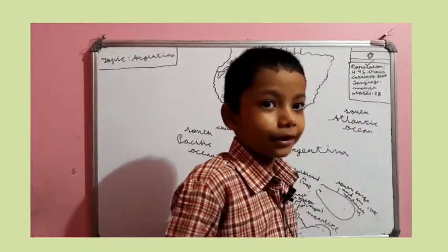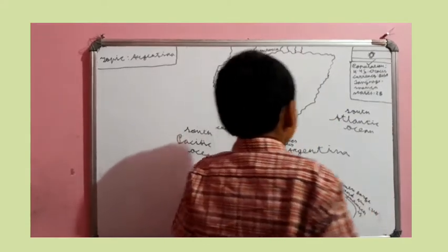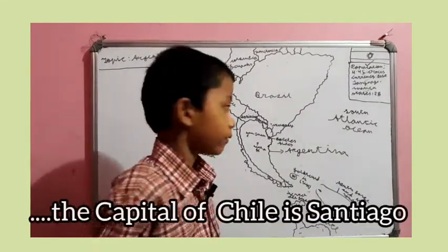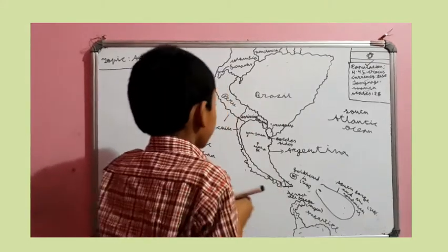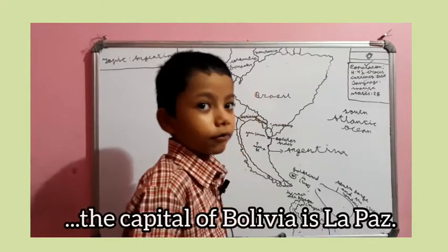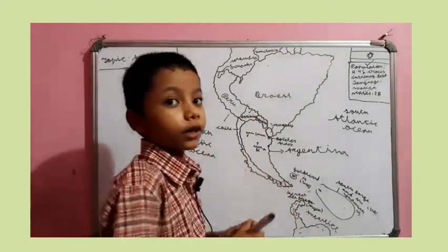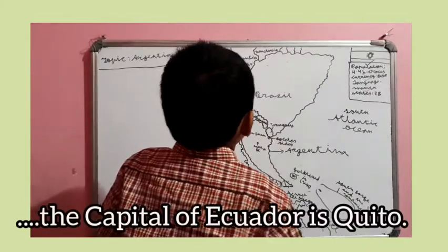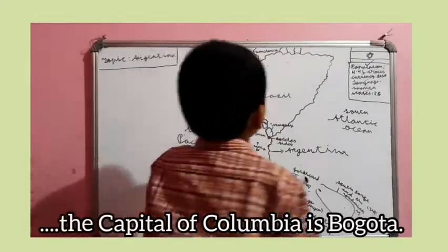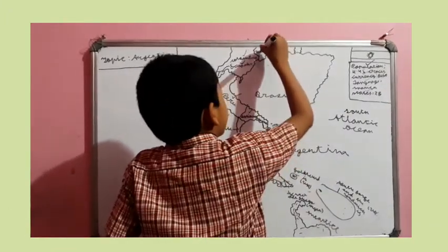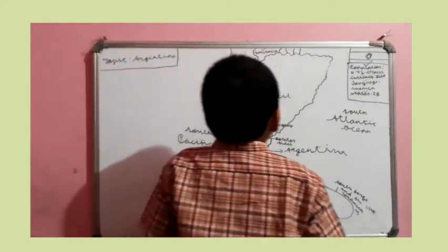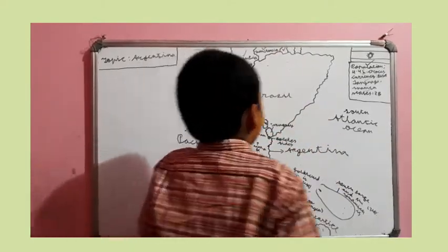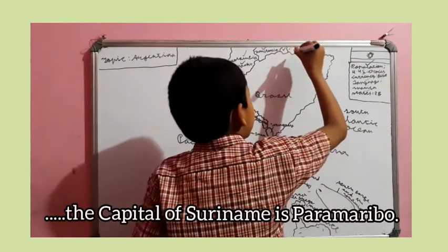Argentina began to fight with the Spanish Empire. The capital of Chile is Santiago. The capital of Bolivia is La Paz and Sucre. The capital of Peru is Lima. The capital of Ecuador is Quito. The capital of Colombia is Bogotá. The capital of Venezuela is Caracas. The capital of Guyana is Georgetown, but there is no name on the map because it's small. The capital of Suriname is Paramaribo.